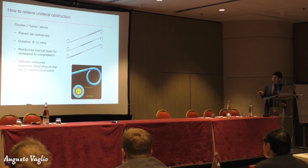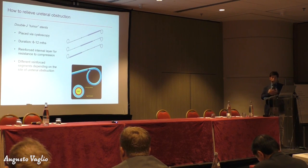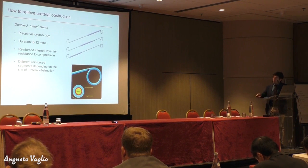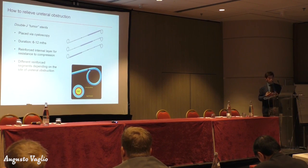So sometimes we need to use a different type of stent called tumor stents. These stents are called tumor stents because they are used to relieve obstructions caused by malignant disease, which usually causes very severe obstructions requiring a stronger stent. These stents are again placed by cystoscopy, have a duration of about 12 months, and have a reinforced internal layer — the reinforced segment depends on the site of obstruction. If you cut the stent, you can see there is an internal part which is very rigid and an external part which adapts to the ureter and is softer. We have a few patients treated with these kinds of stents and they work well.